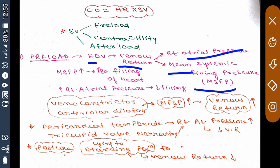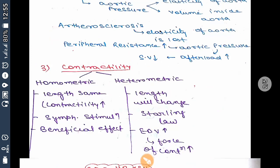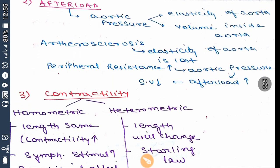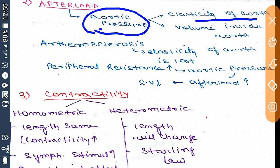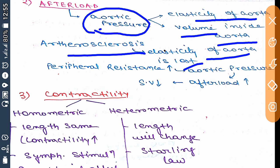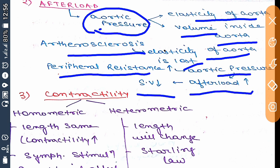Now moving to afterload. Afterload is the aortic pressure — the pressure within the aorta that resists the output of blood from the left ventricle. Aortic pressure depends on two factors: the elasticity of the aorta and the volume inside the aorta. In arteriosclerosis, elasticity of the aorta is lost, so cardiac output decreases by decreasing stroke volume. When peripheral resistance increases, it increases aortic pressure, which increases afterload and decreases stroke volume.